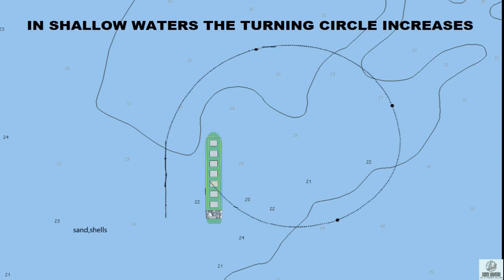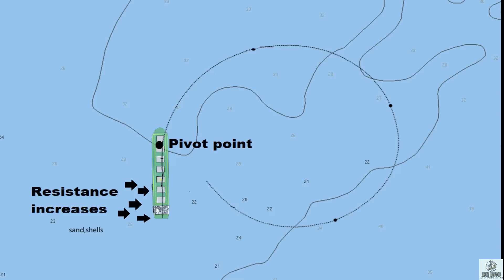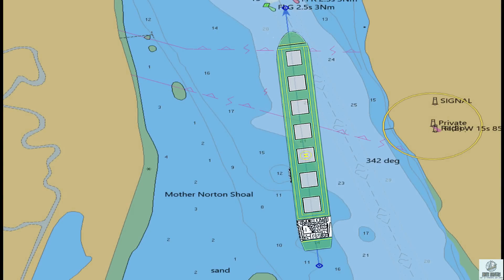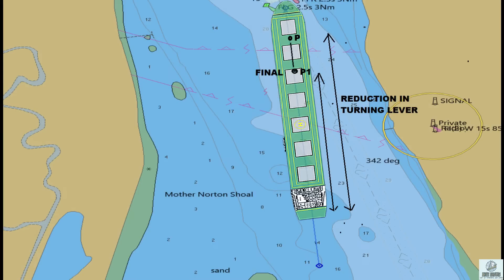In shallow waters, the turning circle of a ship increases. As a ship turns in shallow water, the water cannot pass easily under the keel. This is because of the increase in the lateral resistance on the hull after the pivot point, also known as the turning lever. This shift of the pivot point is due to the lateral resistance on the hull as more water is passing along the hull.